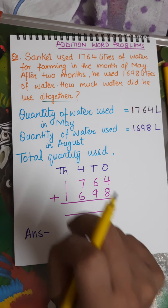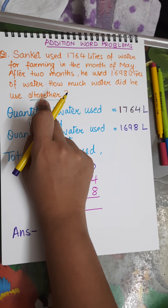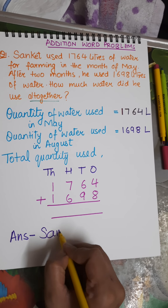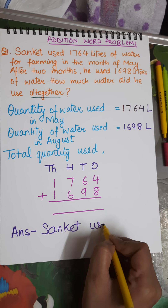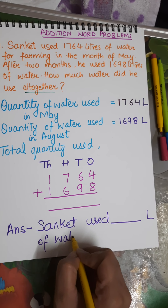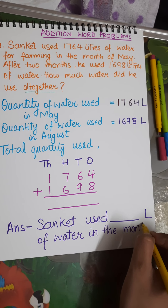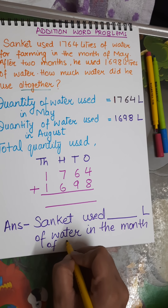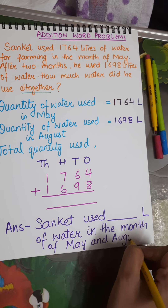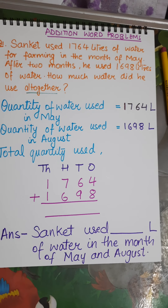Coming back to the answer statement — the answer is written in a full line. How much water did he use altogether? Sanket used a total of [calculated amount] litres of water in the month of May and July.